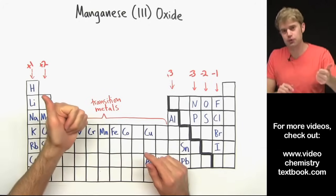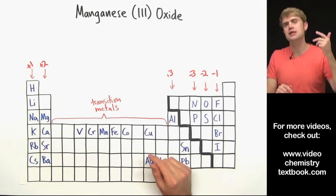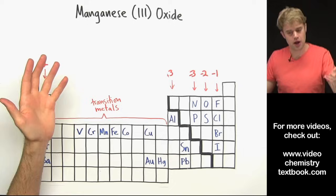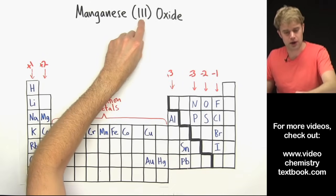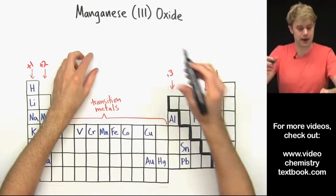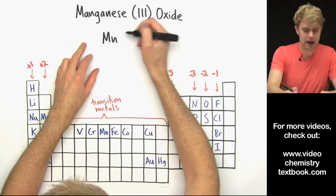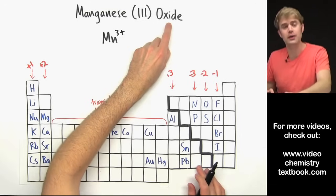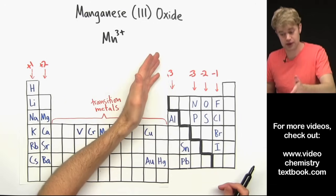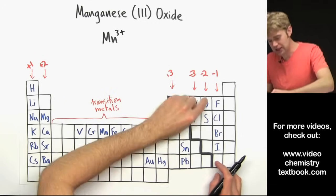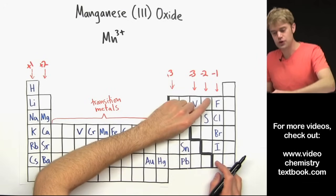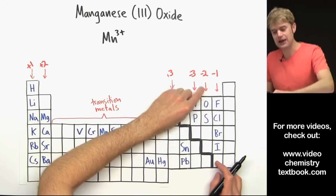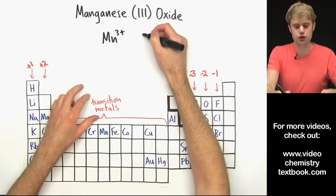You can have Mn2 plus, 3 plus, 4 plus, 6 plus and 7 plus. So the Roman numeral 3 here is telling us that in this compound manganese has a 3 plus charge. Now oxide is what we call oxygen when it has a negative charge. Oxygen is in this column here which means that in an ionic compound it has a charge of 2 minus.